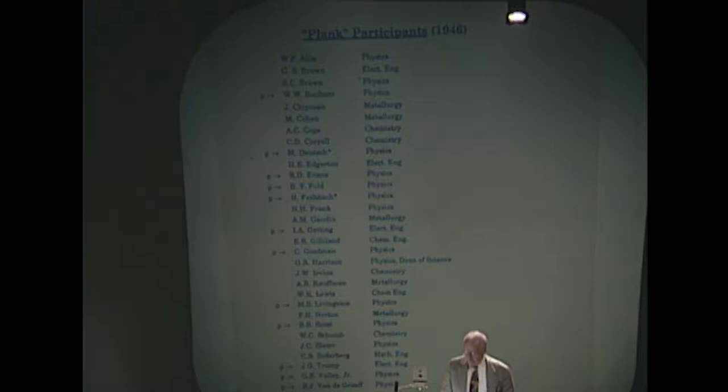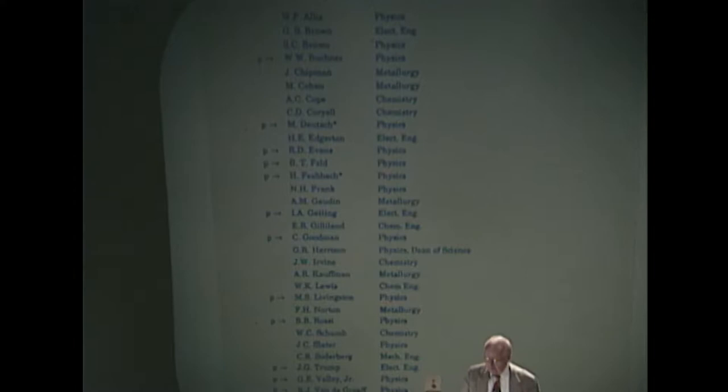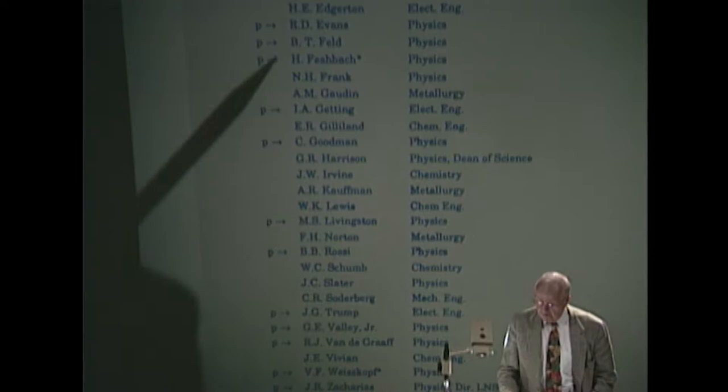Its initial scientific program covered theory, cosmic rays, physics and chemistry, engineering, a modest budget of a million dollars a year or so, and two MeV Van de Graaff, a seven MeV cyclotron, but with more to come. Here I have a listing of the so-called plank participants, a Navy term to indicate those that were here initially. It reads like a who's who at MIT at the time.